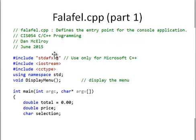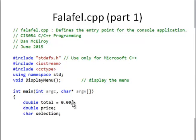Here's part one — the setup. I have my pound includes, and right here is a function prototype: void displayMenu(). I have this prototype because the displayMenu function is defined later in the code. In int main(), I declare double total = 0.00 for the price, and a char variable for the selection. Each time somebody makes a selection, I add its price to the total. I need double for decimal places.